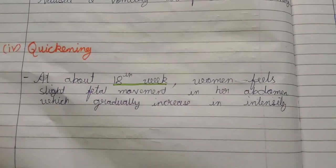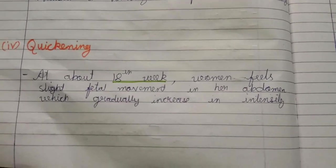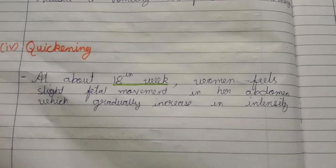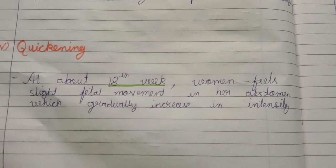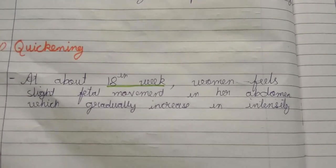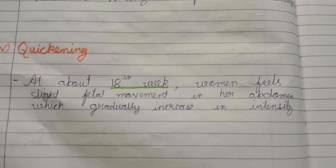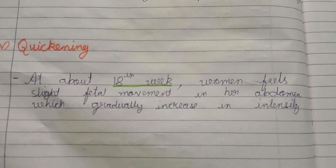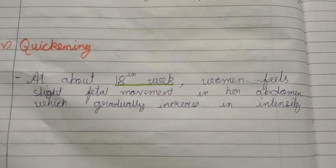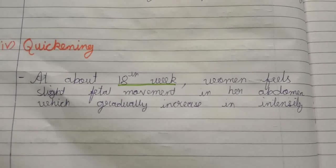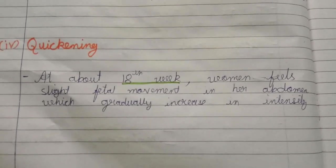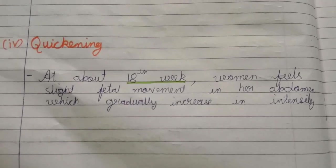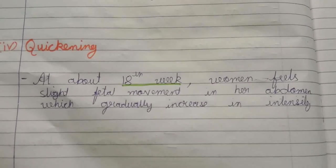The fourth sign is quickening. At about 18 weeks, the woman feels slight fetal movement in her abdomen, which gradually increases in intensity. The first felt movement of the fetus is considered quickening, from which she can identify that fetal movement has occurred.